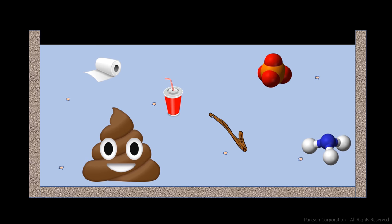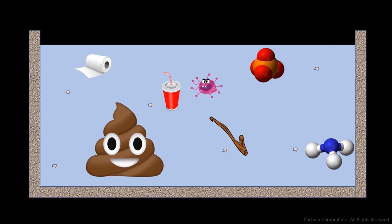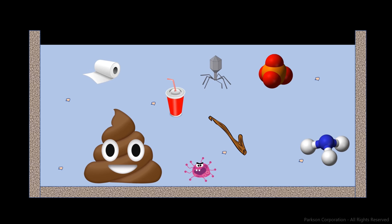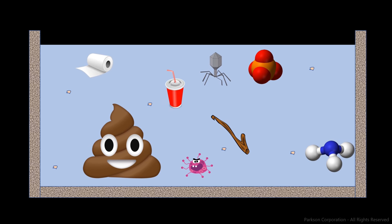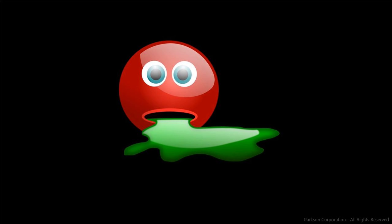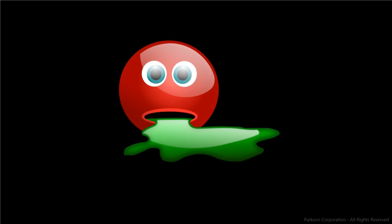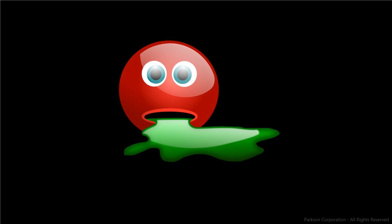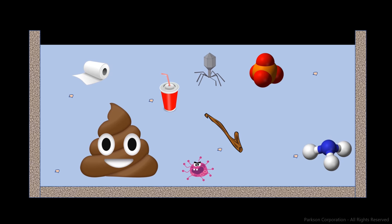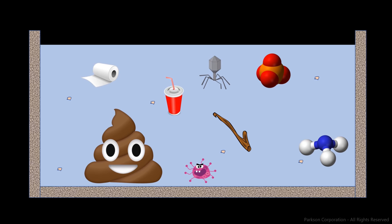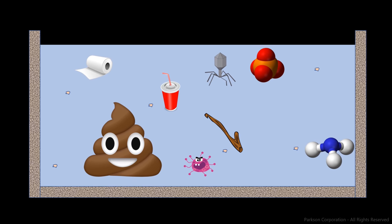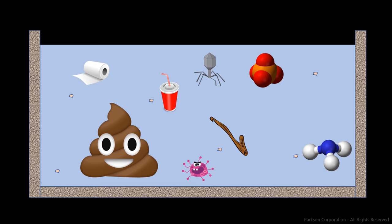And the last guests to our party are pathogens and viruses. Why they're bad and why we have to treat them is pretty straightforward: they make us sick, so we have to kill them before discharging any water from a plant. And with that, we have our complete cast of characters for this introduction to wastewater treatment.